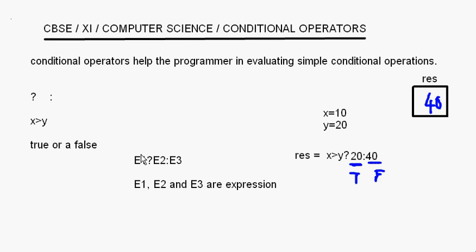If E1 is true, execution comes to E2 — that is the true condition. If E1 is false, execution comes to E3 — that is the false condition. Remember that.